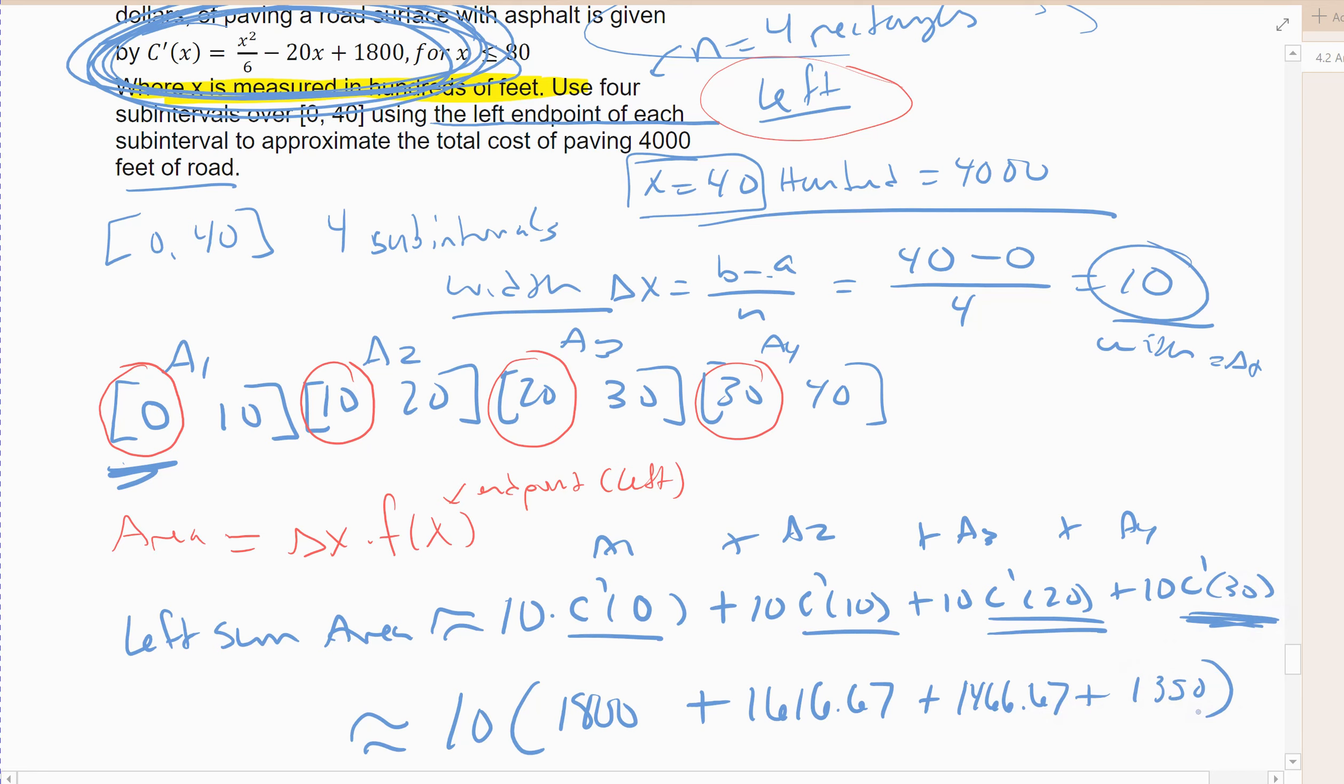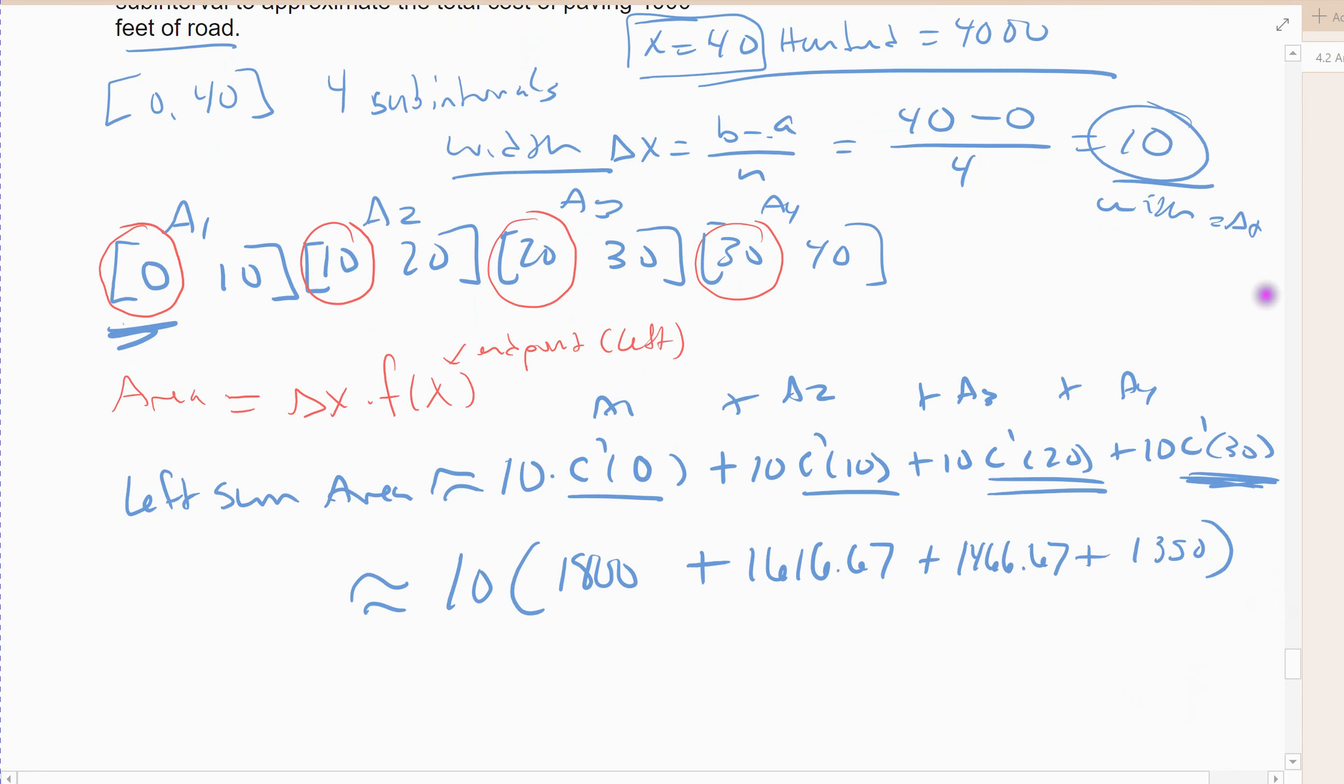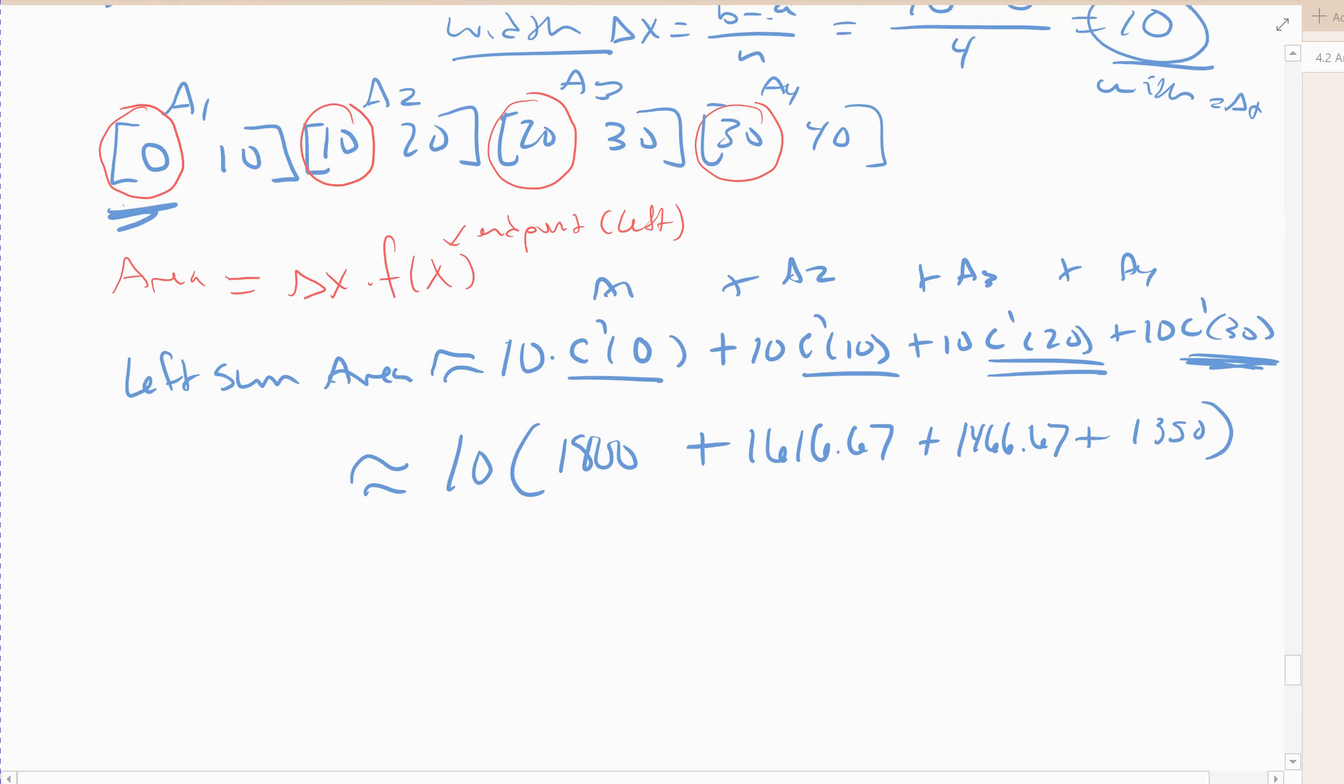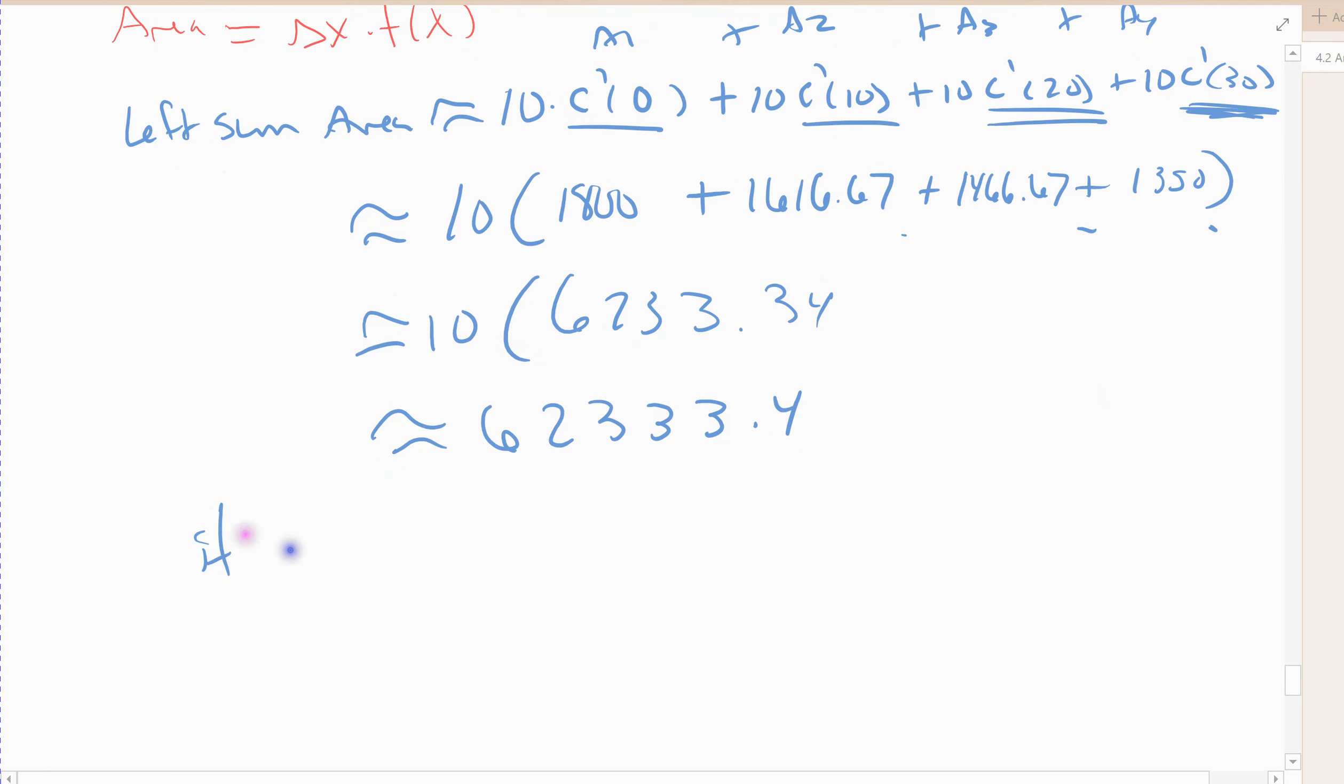Alright, but you can, and the book does it. So if you watch the videos the book does in MyLab, they will draw them for you. Alright, so it's going to be 10 times when I add up those four heights, 6233.34, and so 62333.4. Alright, so it costs about $62,333.40.